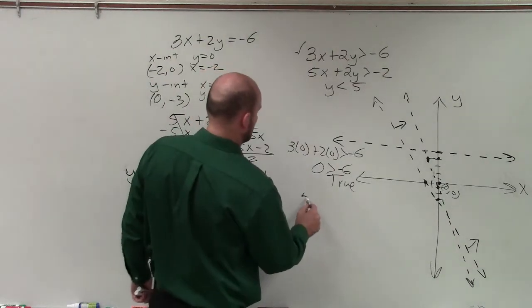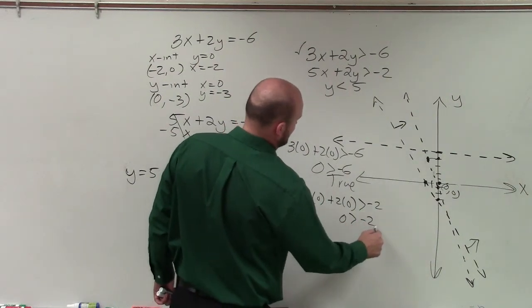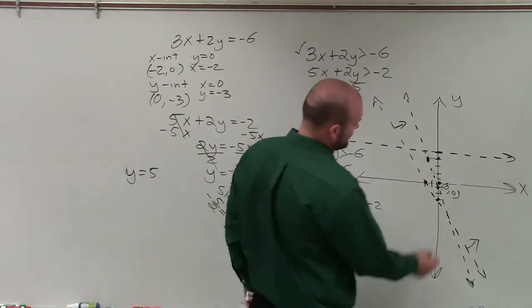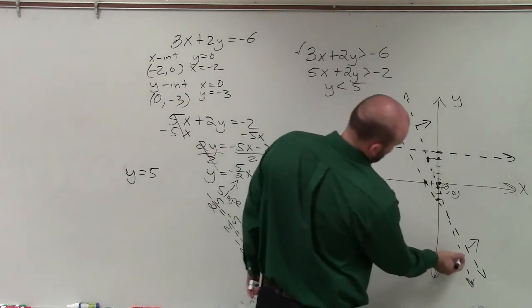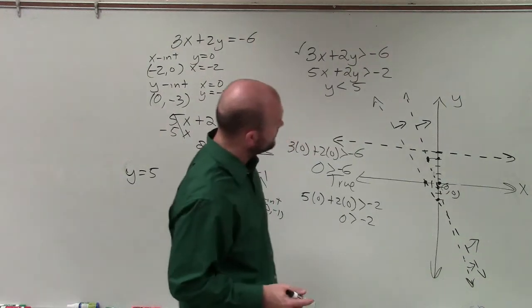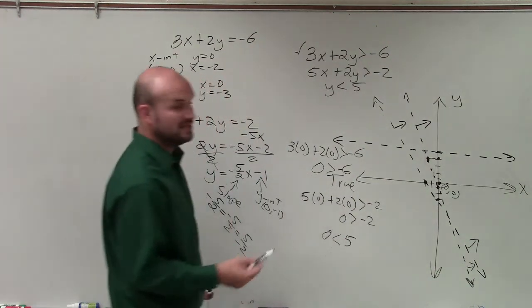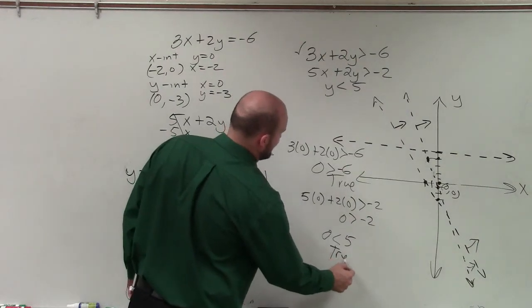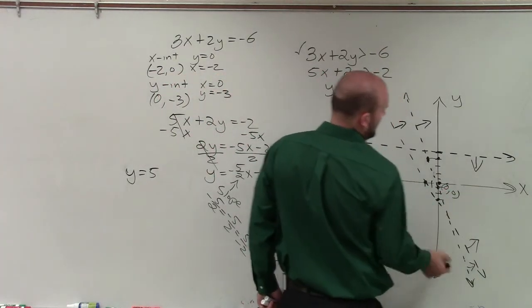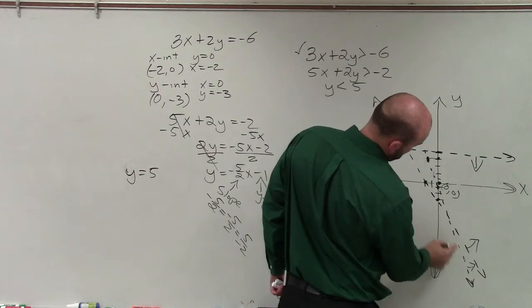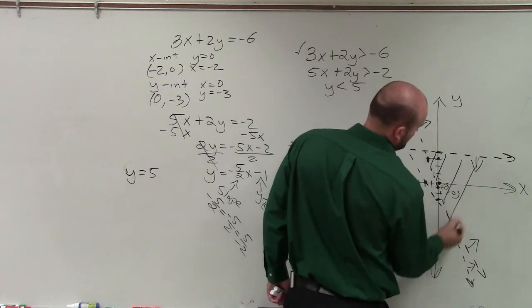Now let's move to the next one. 5 times 0 plus 2 times 0 is greater than negative 2. 0 is greater than negative 2. And in this case, you can see, again, that is true. So for this inequality, which does not go through 0, 0, it is true. And now in the last one, I have 0 is less than 5, which in this case, you can say, is also going to be true. So now I am shading below this, below that, above that. So you can see that the only region where it's going to be true for all three of them is going to be right here.